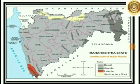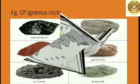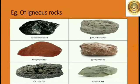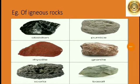Look here — a map of Maharashtra state showing the distribution of major rocks. The Maharashtra plateau and the Sahyadri are formed out of igneous rock. For example, basalt, granite, laterite, scoria, obsidian, pumice, etc.